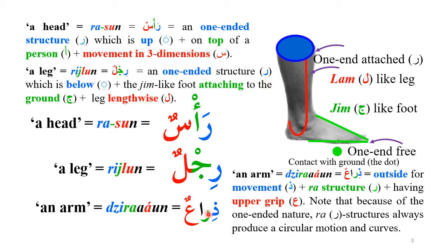Let's see a few words. First, 'rijlun' — it is a ra-like structure; the jim has a dot below, and there is a ha-like shape for the feet, while the lam is lengthwise indicating something that attaches to the ground. Notice there is a kasra indicating something below. Then 'rasun' has a fatha, indicating something above — which is the case of the head — and notice how ra denotes things at the extreme end of the body.